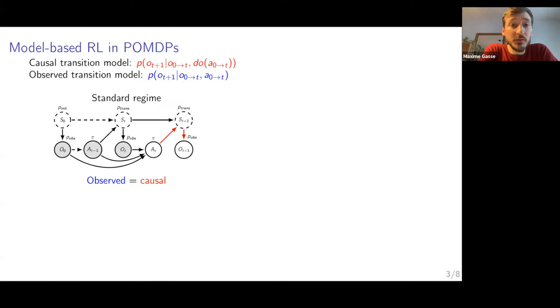If the data that you collect is in the standard POMDP regime, meaning that the agent took actions only based on the past observations and actions, which we call the history, then there is no confounding issue. What you observe is the causal transition model. So if you collect offline data from an agent that acts based on the same information as the learning agent, you're fine. You can just do standard model-based POMDP.